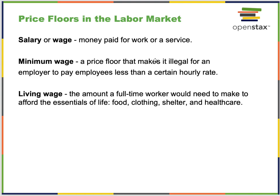A living wage is the amount a full-time worker would need to afford essential needs — food, clothing, shelter. There's no rule in economics that says the equilibrium wage and the living wage have to be the same. Ideally we'd want someone working 40 hours to be able to sustain themselves, but that does not always happen.